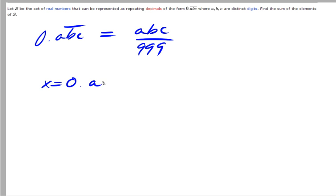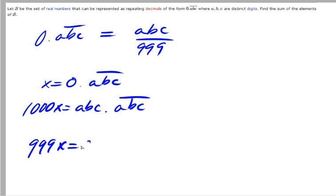Let x equal 0.abc repeating. Then 1,000x is abc point abc repeating. Subtracting these, 999x equals abc because this cancels out completely. And x equals abc over 999.